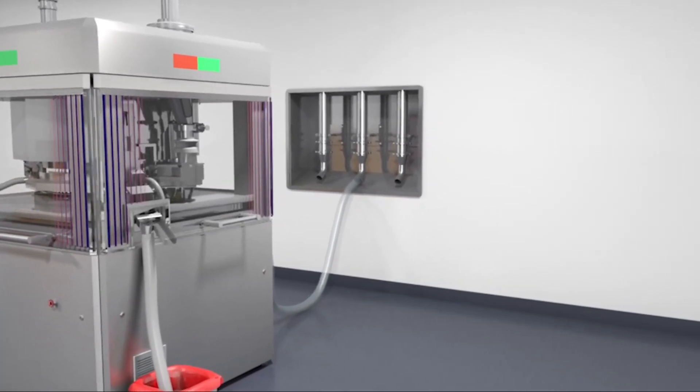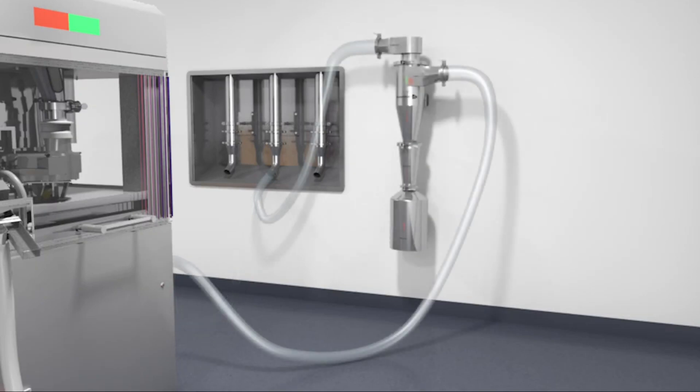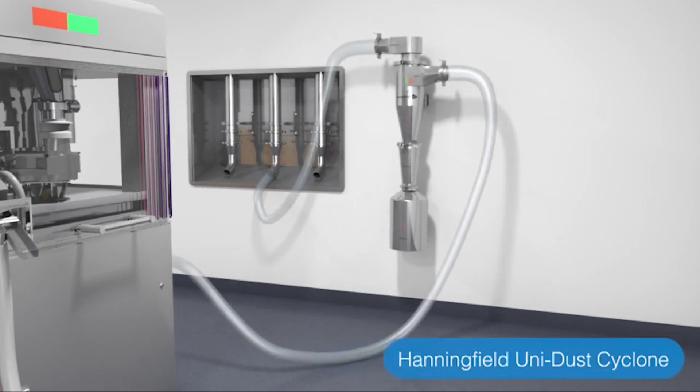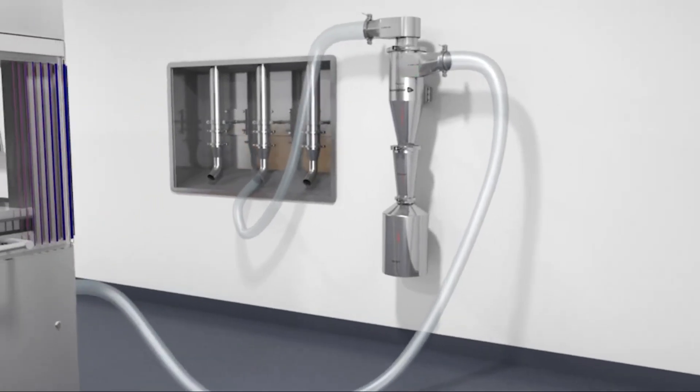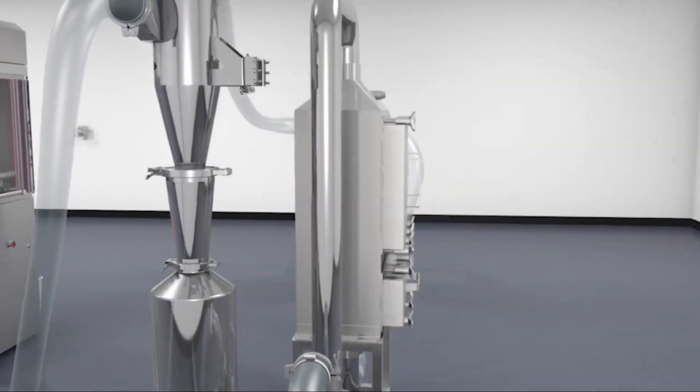Hanningfield have engineered a solution to these common problems: the Unidust High Efficiency Filterless Powder Recovery Cyclone. The cyclone is designed to be fitted or retrofitted between the process machine and the local exhaust ventilation line inside the process room.